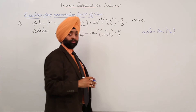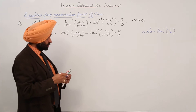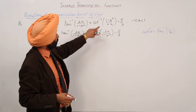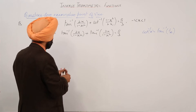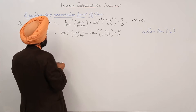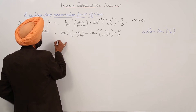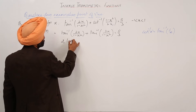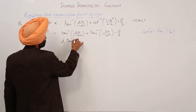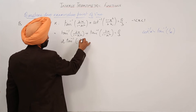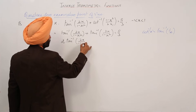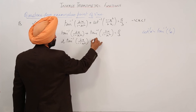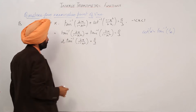So this was a property. Using this one, I have converted cot to tan. Now this becomes: tan inverse (2x upon 1 minus x square) plus tan inverse (2x upon 1 minus x square) is equal to pi by 3.